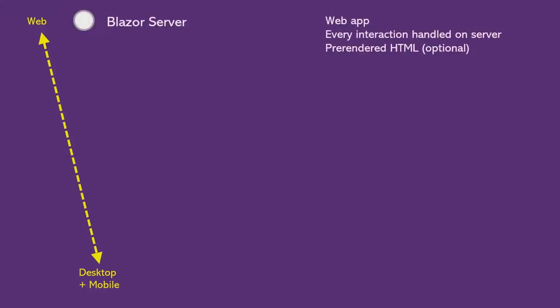We've already seen Blazor Server apps in .NET Core 3.0 — it's available this week. Download, install it, and try it out. Blazor Server apps enable you to add rich client-side interactivity to your existing .NET web applications. They run on the server but allow you to have that client interactive feel like a single-page web application. They also enable you to leverage the capabilities of the browser using JavaScript Interop.